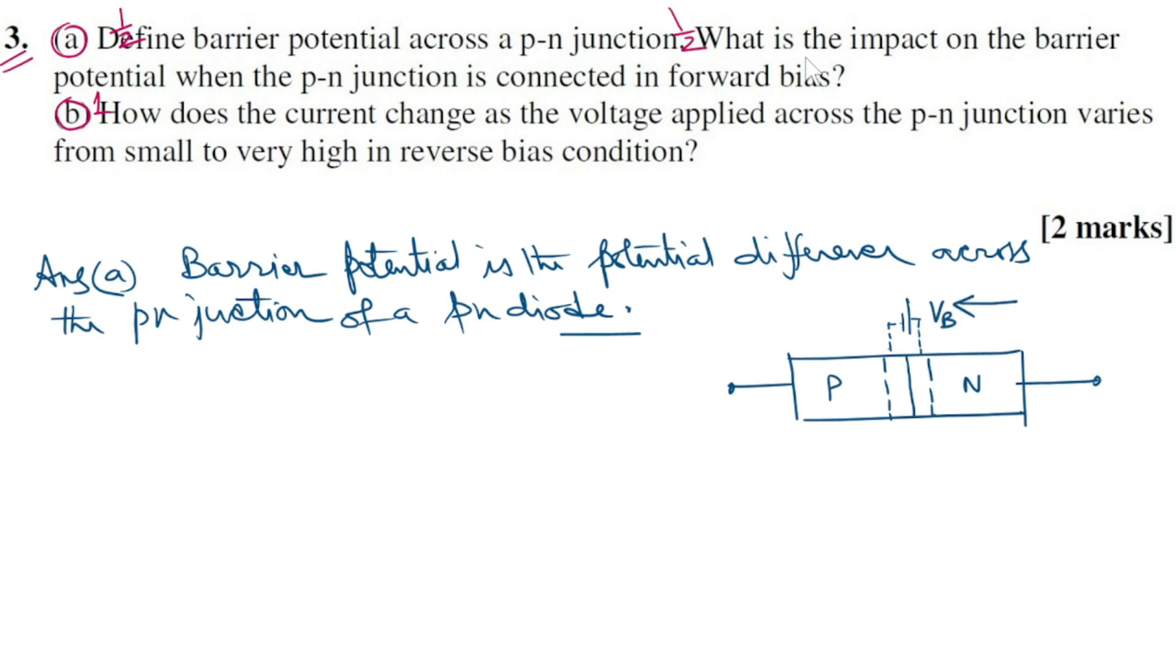The next subpart of the question is what is the impact on the barrier potential when the p-n junction is connected in forward bias. The net potential difference across the junction decreases as the direction of electric field caused by the external battery is opposite to the direction of the electric field within the p-n junction.